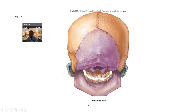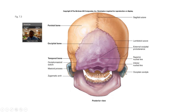Posterior view. You can see the lambdoidal suture and the coronal. There's one over here connecting with the temporal bone. You can see the mandible — no eyes visible, so you know it's a posterior view. And this is the zygomatic bone. I was pointing at the suture there near the temporal bone.